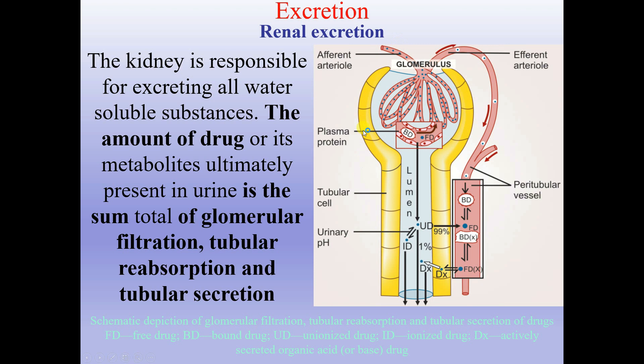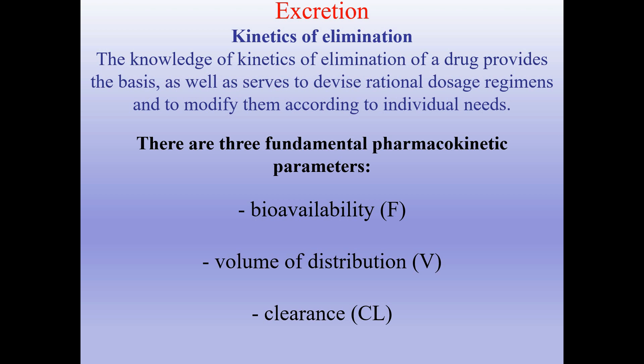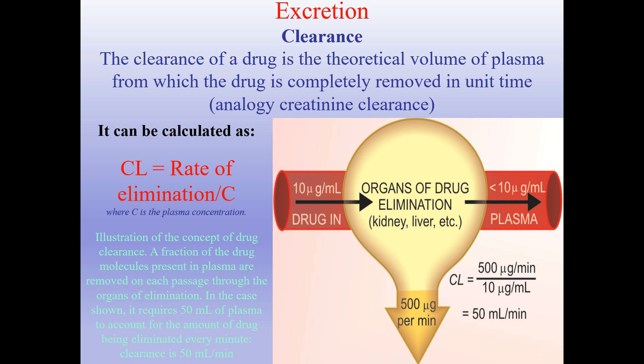Kinetics of elimination. The knowledge of elimination kinetics provides the basis to devise rational dosage regimens and modify them according to individual needs. There are three fundamental pharmacokinetic parameters: bioavailability, volume of distribution, and clearance. Clearance is the theoretical volume of plasma from which the drug is completely removed in unit time — analogous to creatinine clearance — and can be calculated using the formula where C is the plasma concentration.